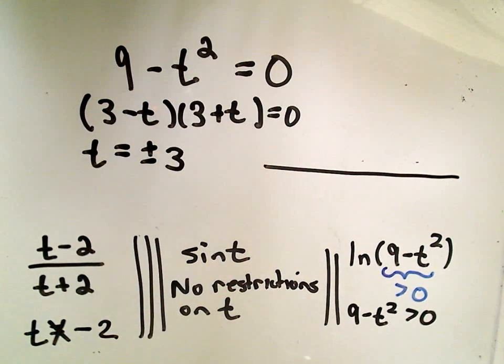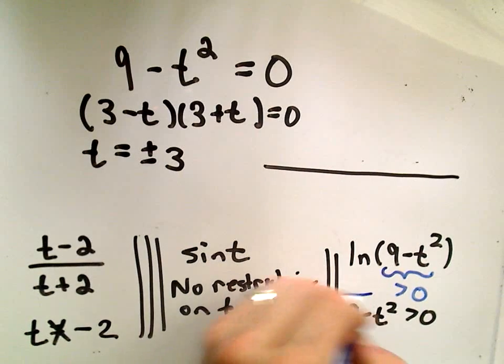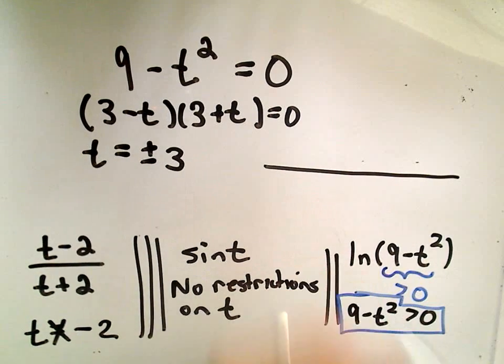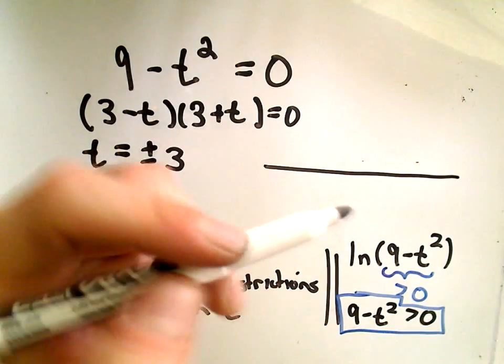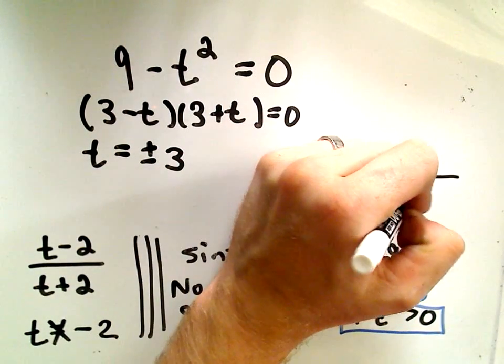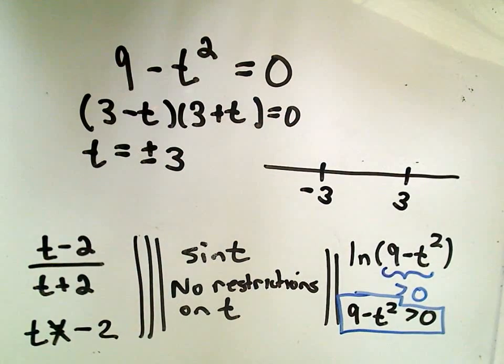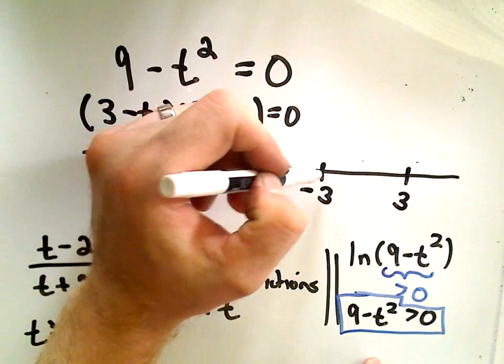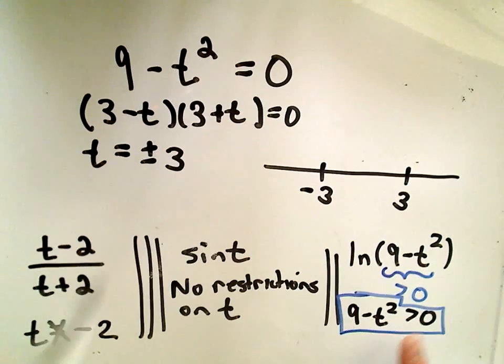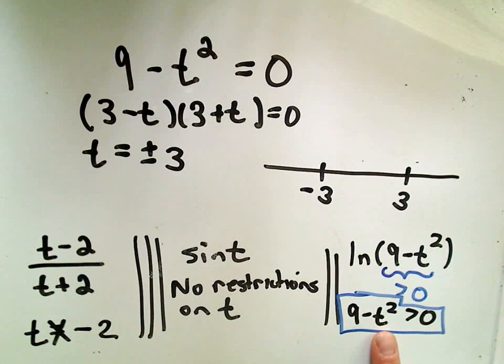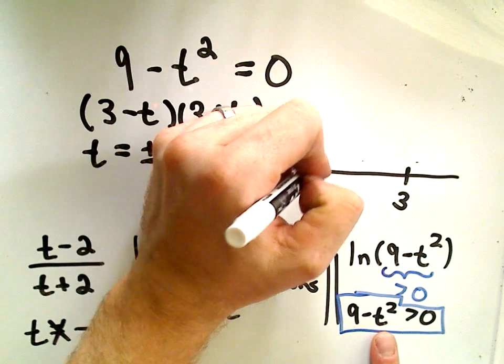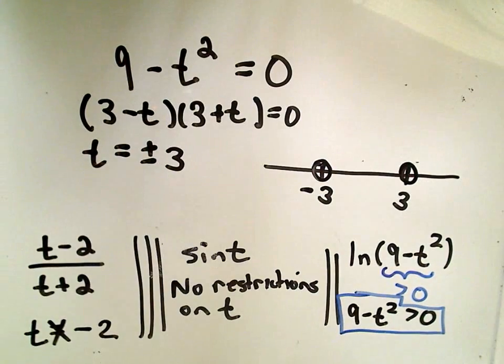So when I look at my quadratic inequality 9-t² greater than 0, what I do is I put the numbers negative 3 and positive 3 on my number line. If you notice, if you put either negative 3 or positive 3, neither one of those values will work because they'll both give us 0 out. So I'm gonna put a little open circle there.